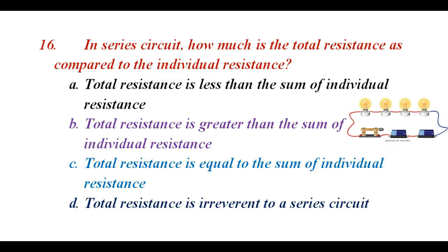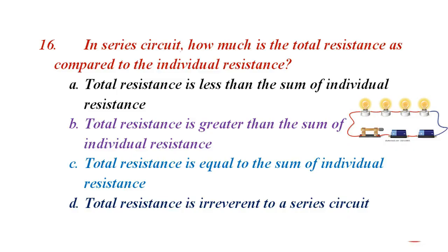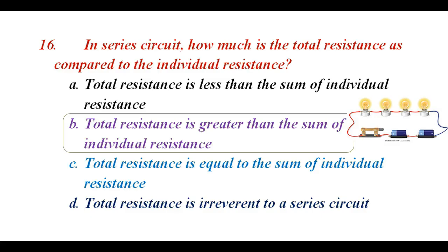In a series circuit, how does the total resistance compare to the individual resistances? A. Total resistance is less than the individual resistance. B. Total resistance is greater than the sum of individual resistances. C. Total resistance is equal to the sum of individual resistances. D. Total resistance is equivalent in series circuits. The correct answer is C. Total resistance is equal to the sum of individual resistances.